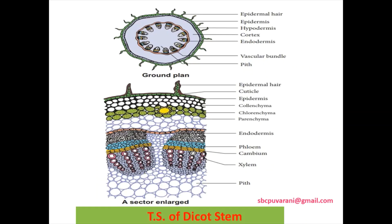Transverse section of dicot stem: a single layer of parenchymatous cells are arranged compactly without intercellular space. The cortex region contains parenchyma, endodermis, vascular bundle, collenchyma and pith. Hypodermis is made up of a few layers of collenchymatous cells and gives mechanical support.